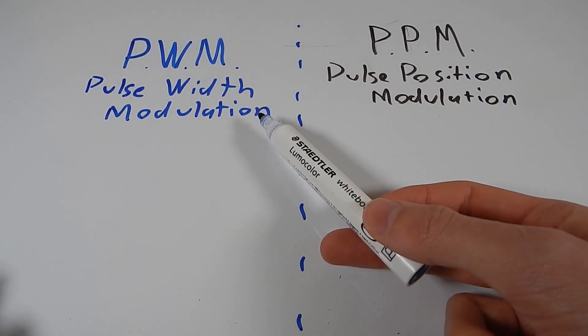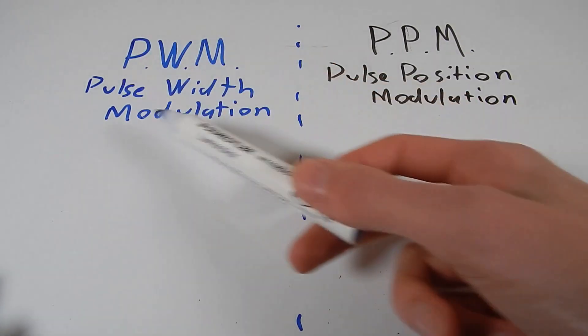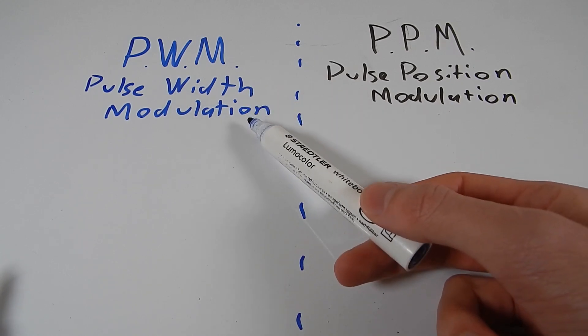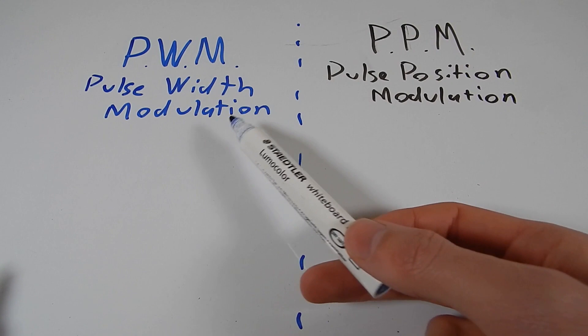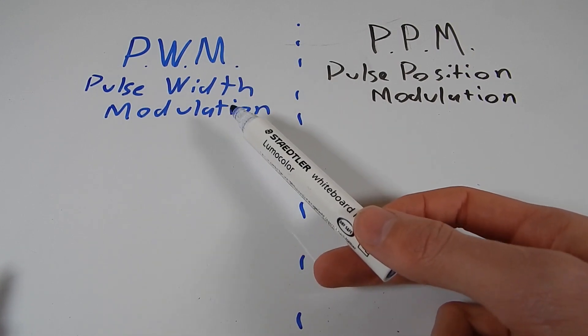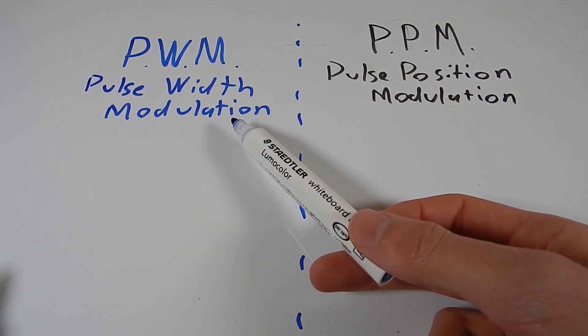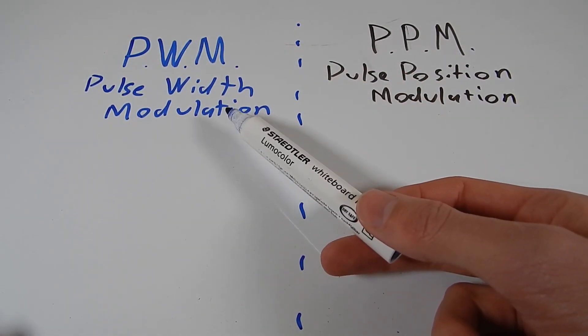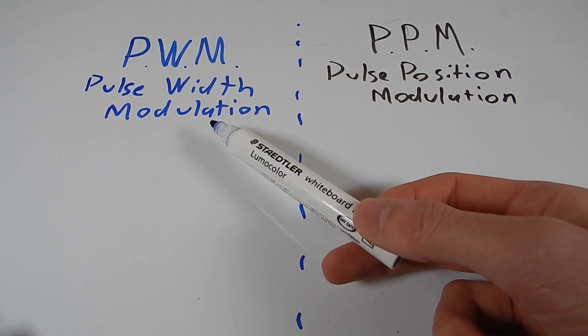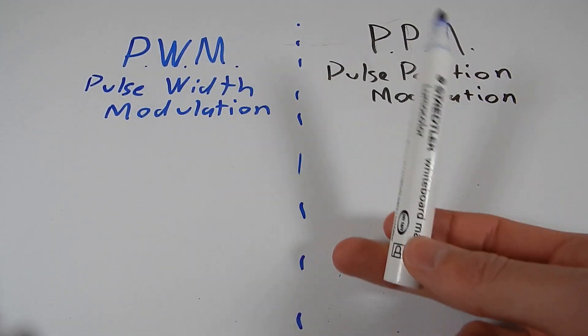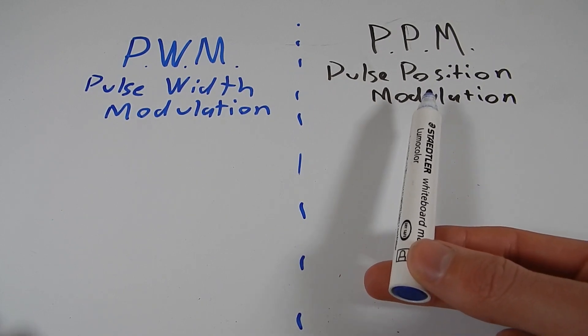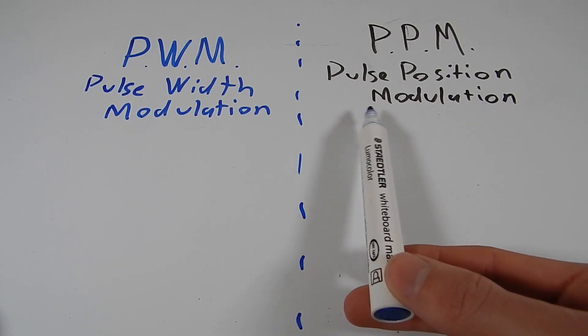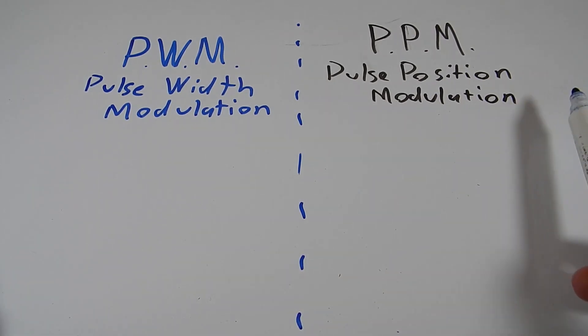So PWM is pulse width modulation. It is the signal type that is used to drive a motor, regardless of whether you are generating the PWM yourself or you're using an ESC that somebody else has built. PWM is what is being used to drive the motor. And then we've got PPM, pulse position modulation, which is a distinct thing from PWM and it is what most RC receivers and gear put out.